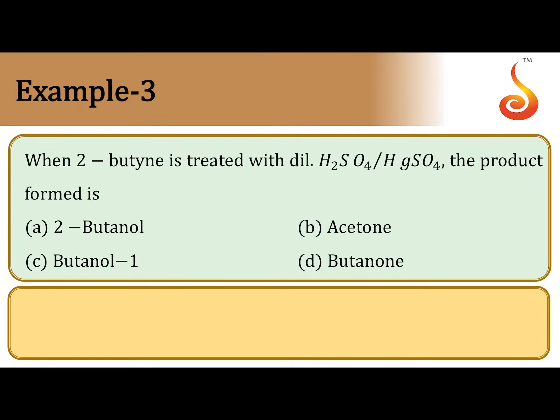When 2-butyne is treated with dilute H2SO4 in the presence of HgSO4, the product formed is determined through acid-catalyzed hydration of alkyne that gives a carbonyl compound via enol form. So first you take 2-butyne when it is...